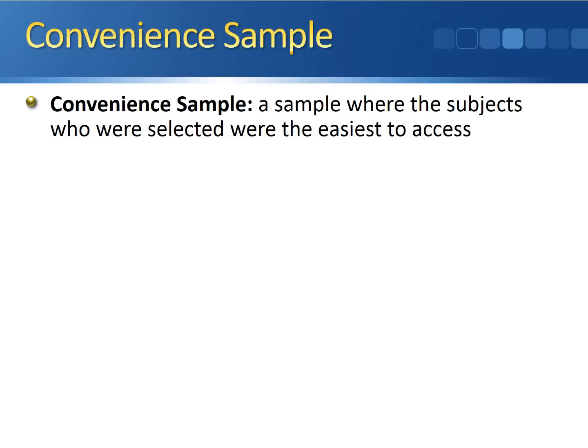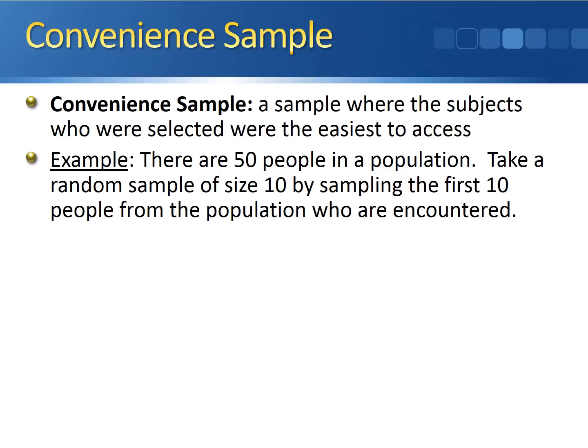A convenience sample is a sample where the subjects who were selected were the easiest ones to access. For example, we have our 50 people and we want to take a random sample of size 10 by sampling the first 10 people from the population who are encountered.